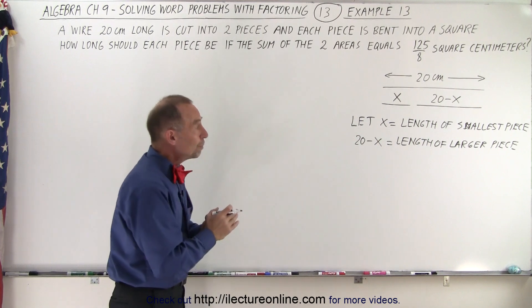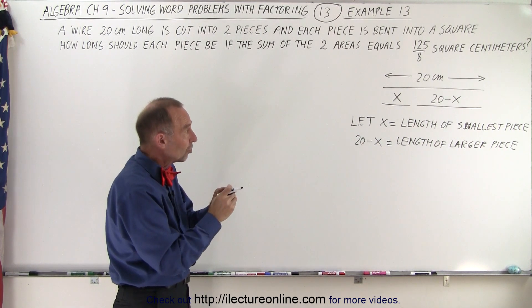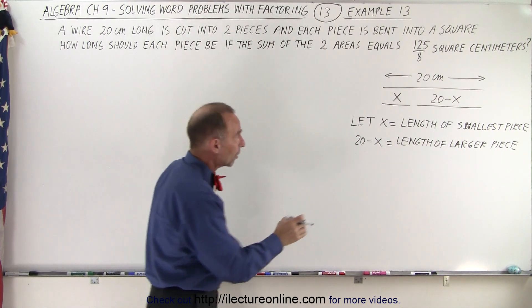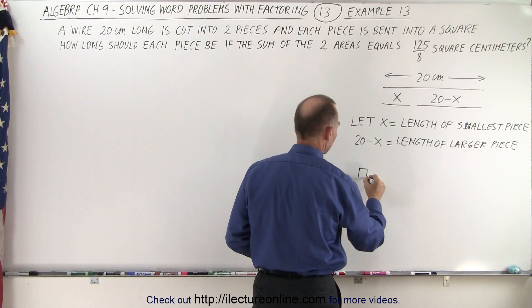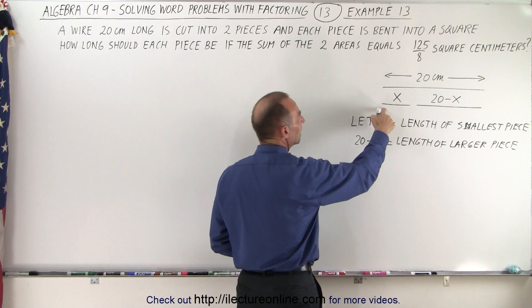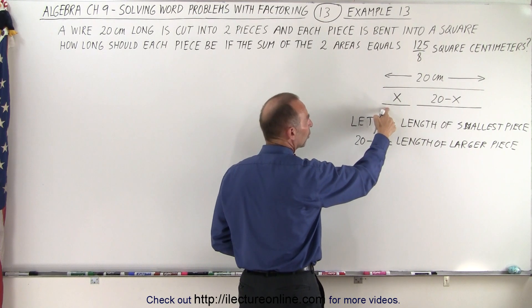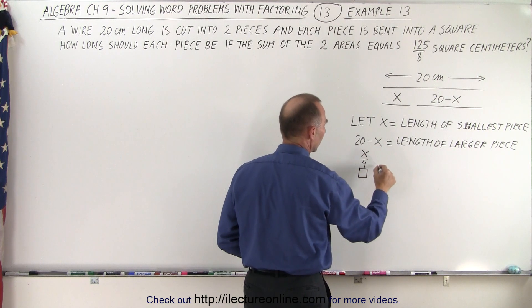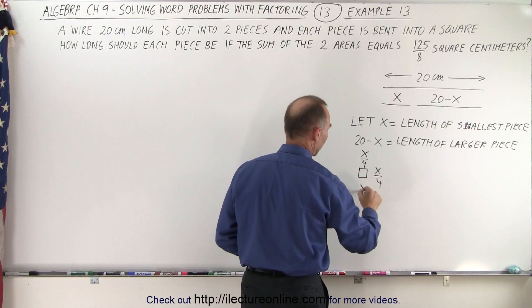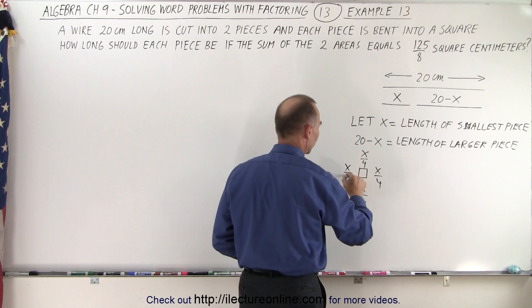Okay, now we're going to take each of those two pieces and bend them into the shape of a square. So we take this piece and bend it into a square, which means that each side would be one quarter the size of the piece. In other words, it would be x over 4, x over 4, x over 4, and x over 4.